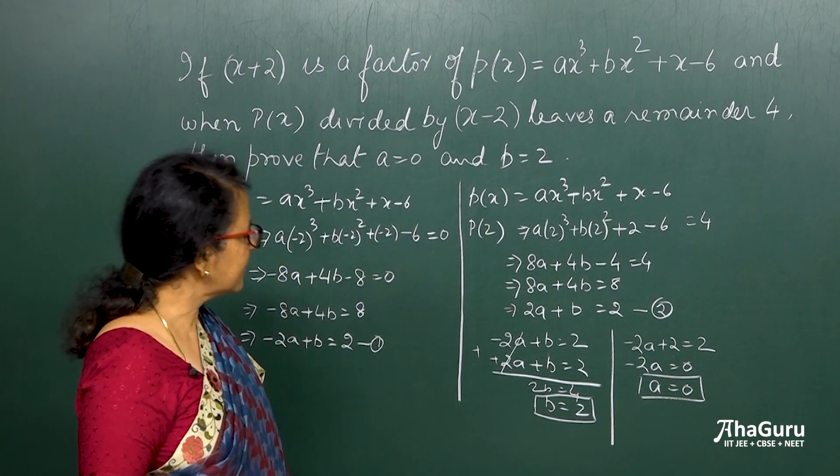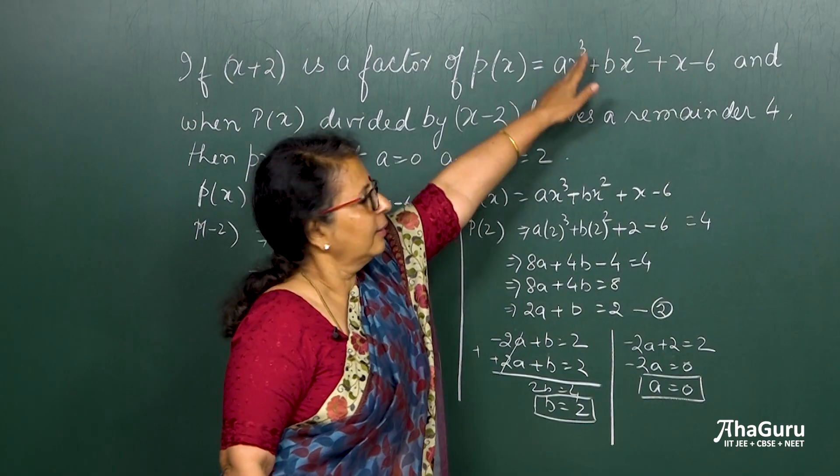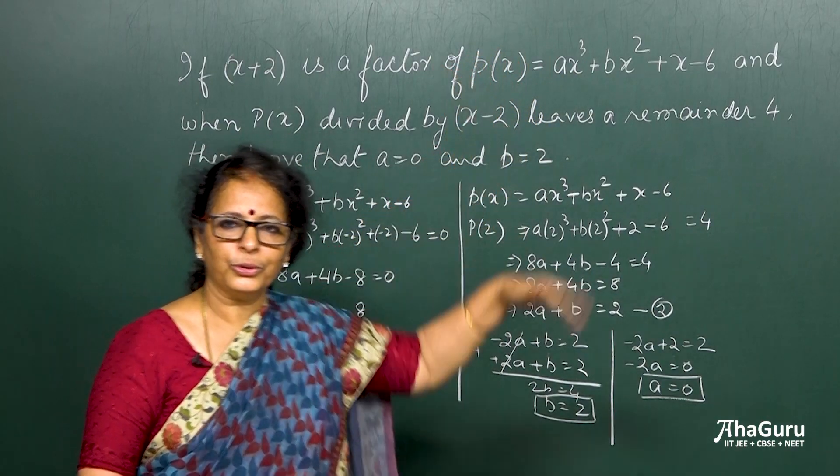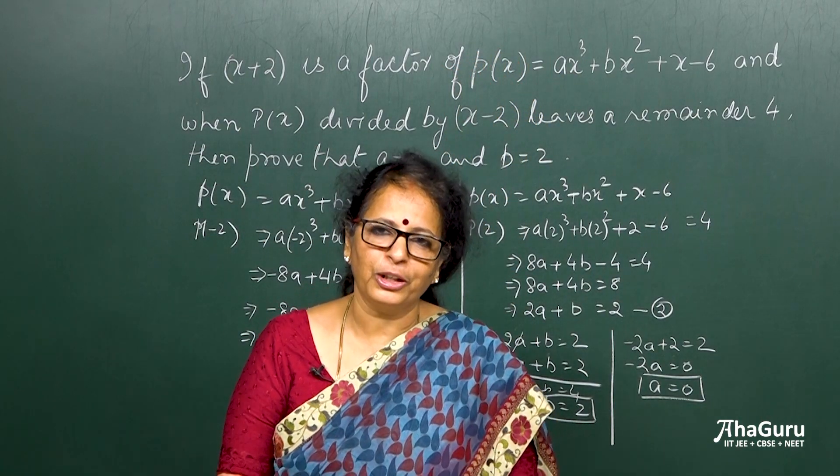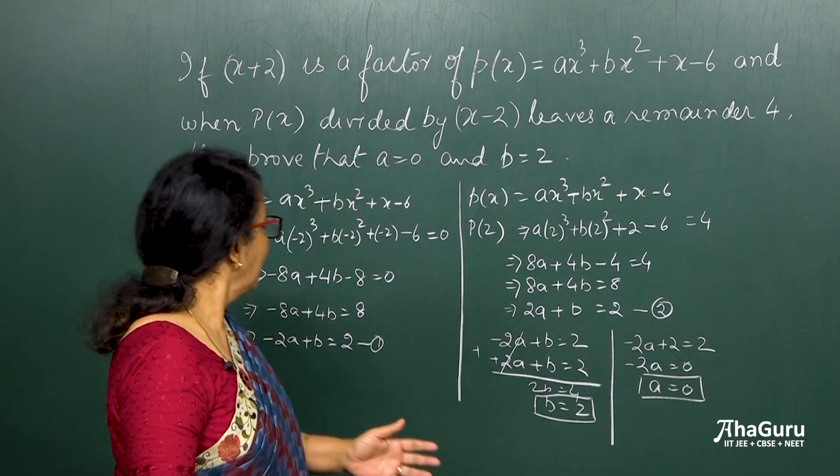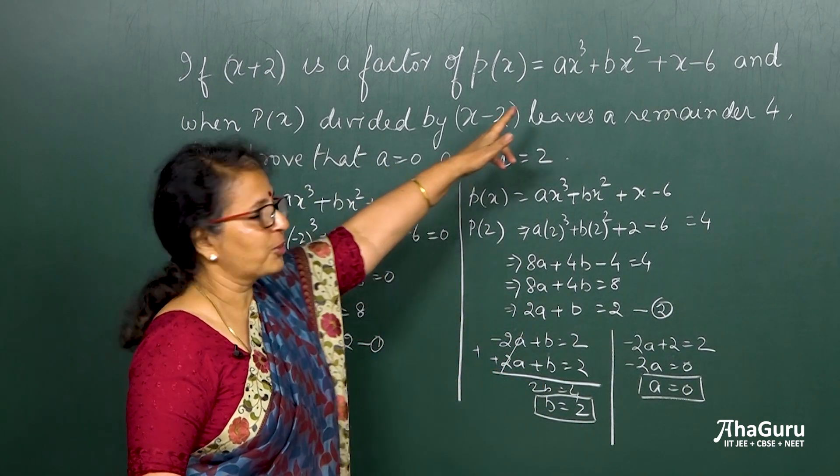Just look at this. A is equal to 0. If I put here a is equal to 0, this entire term vanishes. So initially when I said it is a cubic polynomial, it appeared to be cubic. But then the moment you say a is equal to 0, it's no more a cubic.